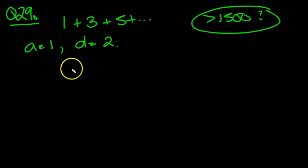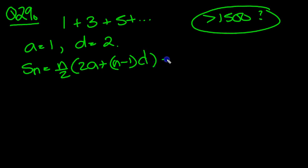We want to find when it's greater than 1,500. So the sum of the first n terms will be n over 2, 2a plus n minus 1d. That's the formula.